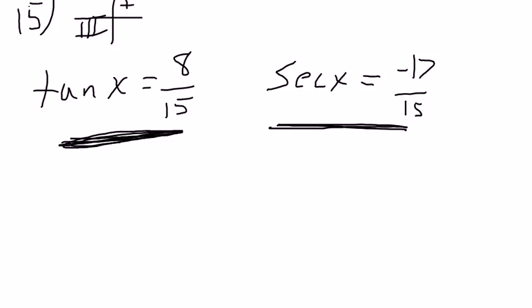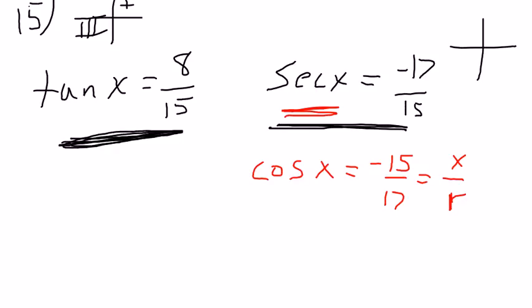Secant is negative. Well, I don't always see secant very well, but I do see cosine fairly well. And cosine would be negative 15 over 17 because it's a reciprocal of secant. Cosine is x over r. The r can never be negative. So we know that this function here is going to have a negative x value, which means it has to be in quadrant 2 or quadrant 3.